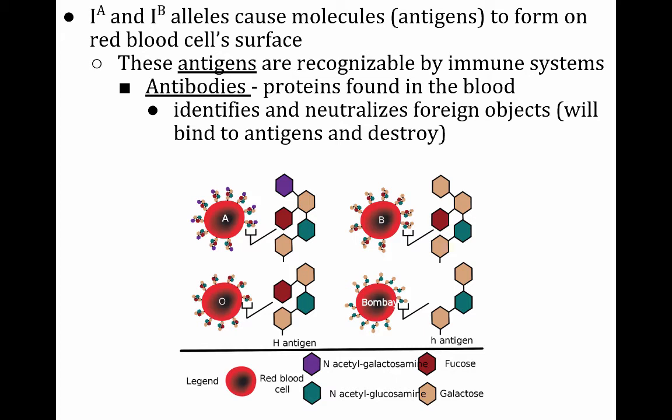So this is just reinforcement of what we just talked about. We said I^A and I^B alleles cause those molecules or antigens to form on the surface. The antigens are recognizable by your immune system, and if there's something there that's not supposed to be there, your body seeks out and destroys it.